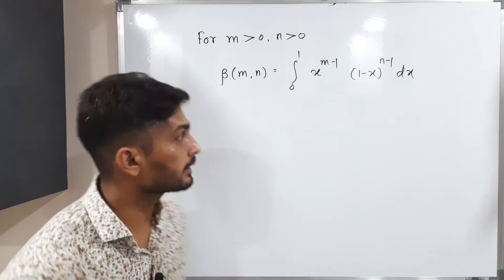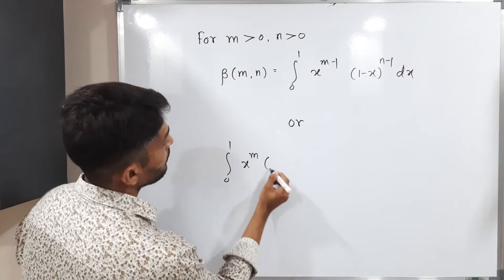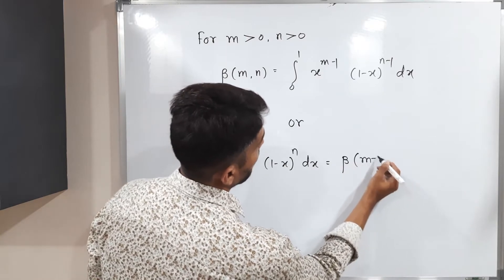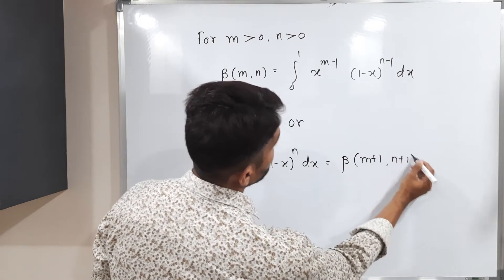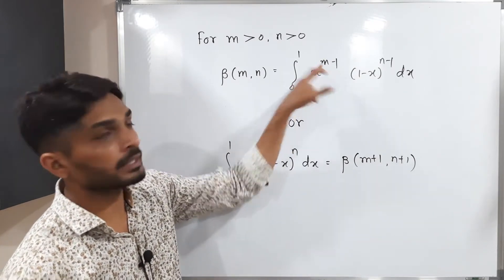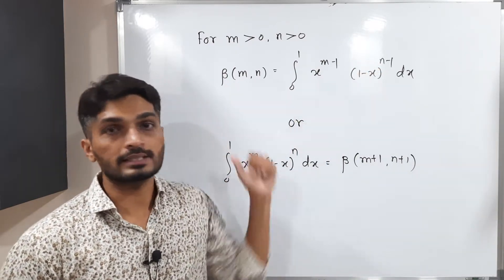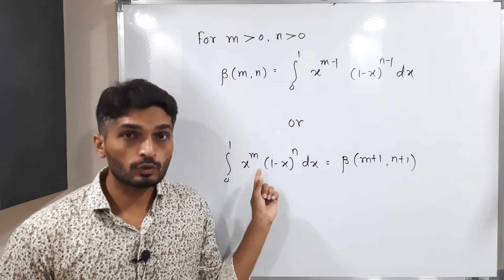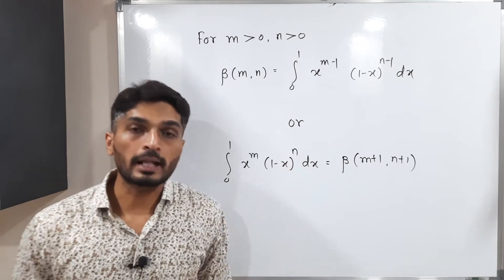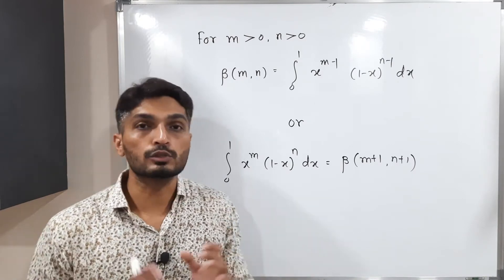The same definition can be written another way: integration 0 to 1, x raised to m times 1 minus x raised to n dx equals beta of m plus 1, n plus 1. The difference is here m minus 1, so if you add 1 we have m in the power. Same with n. Both are definitions of beta function, but this method is very useful to solve problems and find the value of integrations.